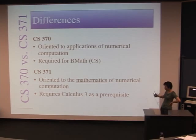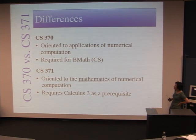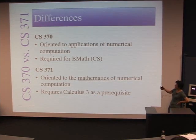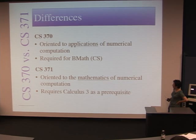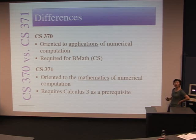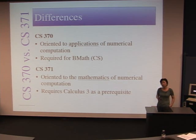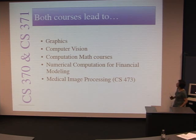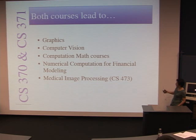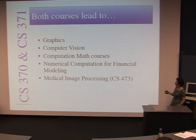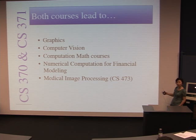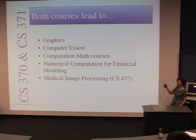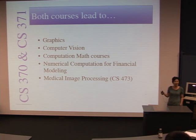CS370 and CS371 — the main difference is that CS370 is application-oriented and is a required course for B-Math CS. CS371 requires a higher mathematics calculus three as a prerequisite and is more math theory-oriented. Both courses are prerequisites for other courses in computer graphics, computer vision, computational math, and also important for CS473 image processing and the computational finance course.